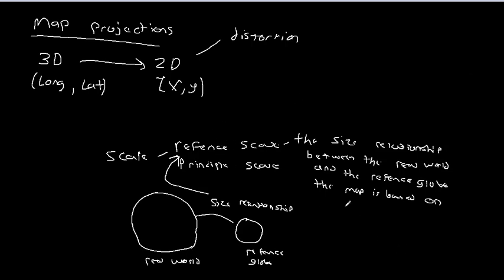And so, for example, if we have a 10 to 1 scale, this means that every one unit on the map is equal to 10 units in the real world. And so, if we had a line that was, say, a hundred kilometers long. A hundred kilometers in the real world would be 10 kilometers on the map.